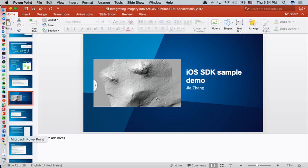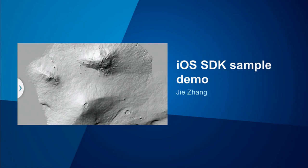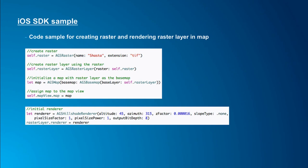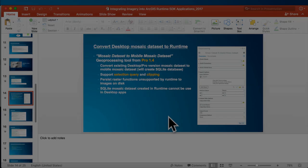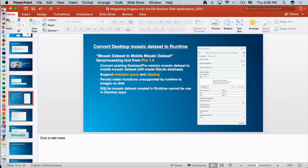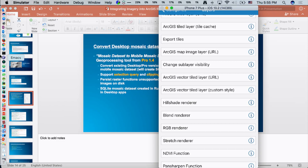Going back to the slides, here's a recap of the things covered earlier: creating rasters and rendering raster layers in map, and detailed description of using the tools to convert desktop mosaic datasets to runtime version. I actually forgot two more examples I'd like to show you: applying raster functions on a raster object. Let's go back to the code for the NDVI raster function example and the pan sharpen function example.